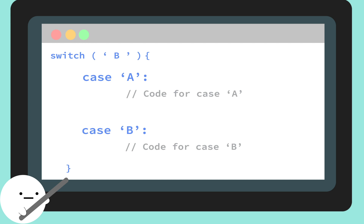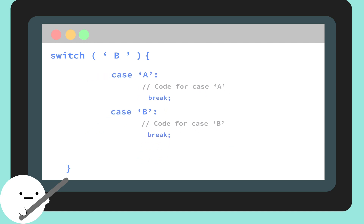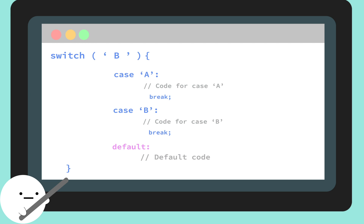Then for each case we would add a thing called a break to exit out of your switch statement and continue on with the rest of your code. Lastly, you can write a default case to handle any other outcome that isn't taken care of by the other cases. It's important to note that if the default statement is used as the last statement in a switch block, it doesn't need a break because the program will just execute its code and move on.